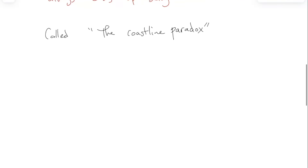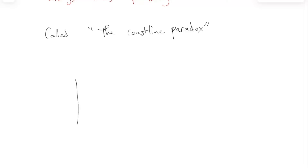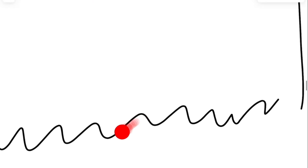As you continue to zoom in on something, its length always ends up being more than you thought it was. This is referred to as the Coastline Paradox. It was first realized when people tried to answer questions like, how long is the coastline of the state of Connecticut? The state of Connecticut looks something like this — and I drew that as super wiggly. Is the real state of Connecticut this wiggly or even wigglier? The answer is even wigglier, because when you zoom in, it's always wigglier than you thought.